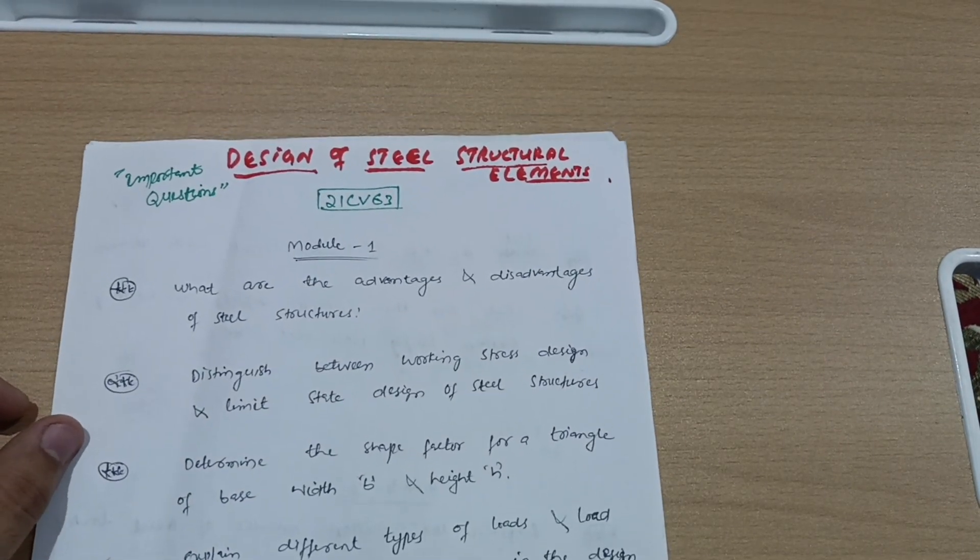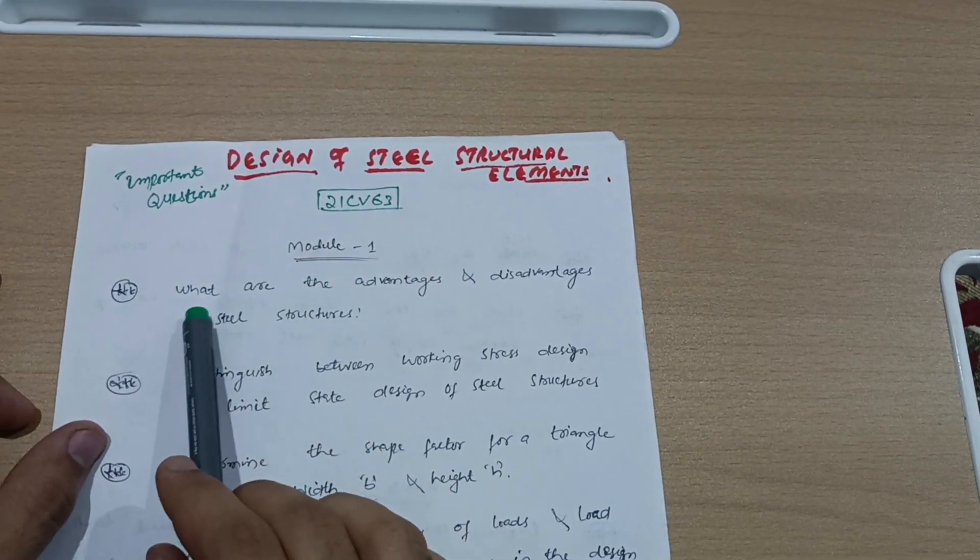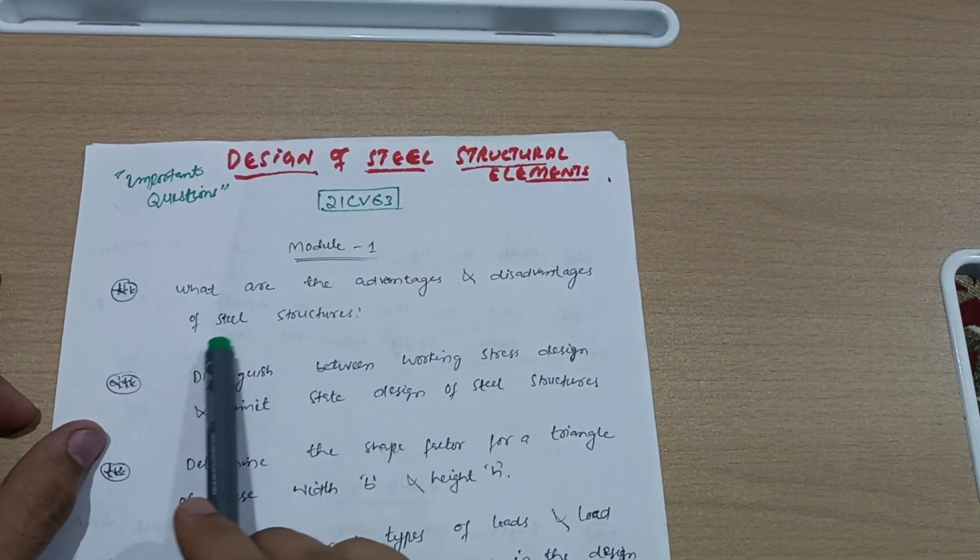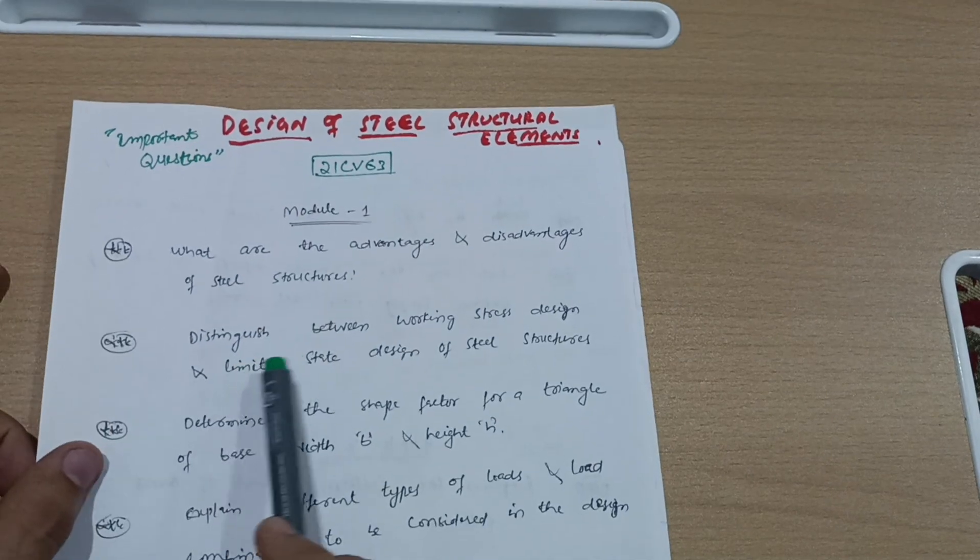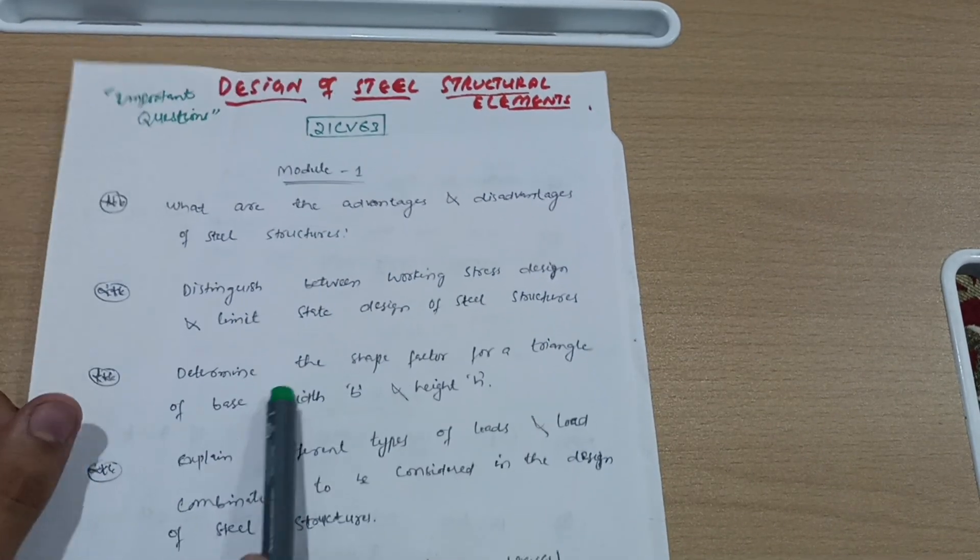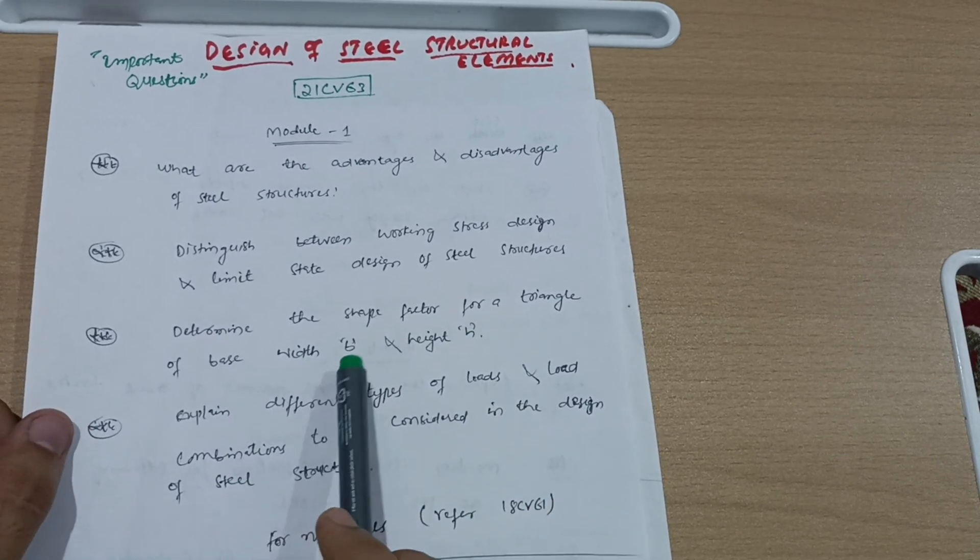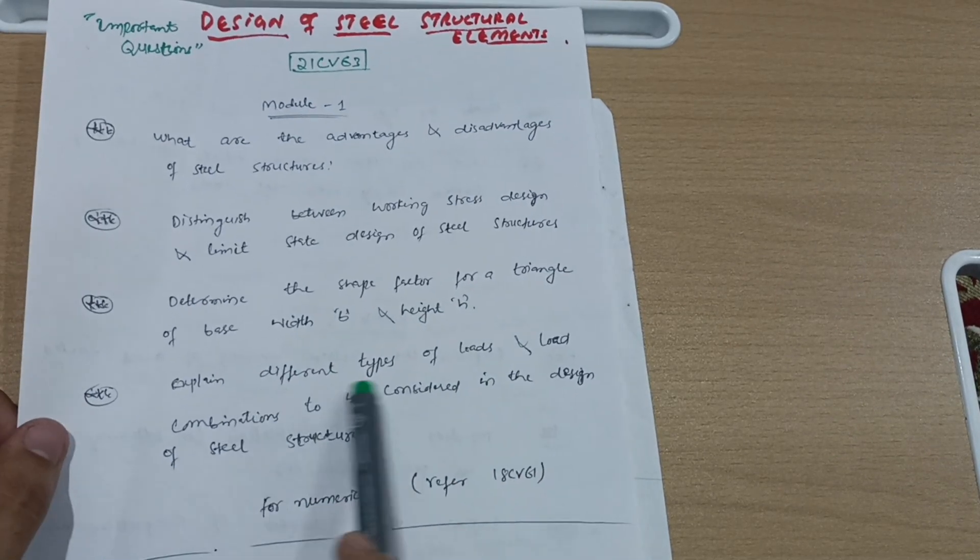First question I will take from Module 1: What are the advantages and disadvantages of steel structures? Distinguish between working stress design and limit state design of steel structures. Determine the shape factor for a triangle of base width and height h. Explain different types of loads and load combinations to be considered in design of steel structures.